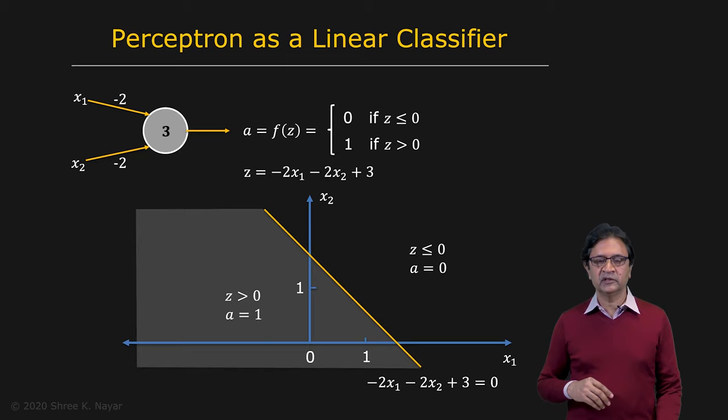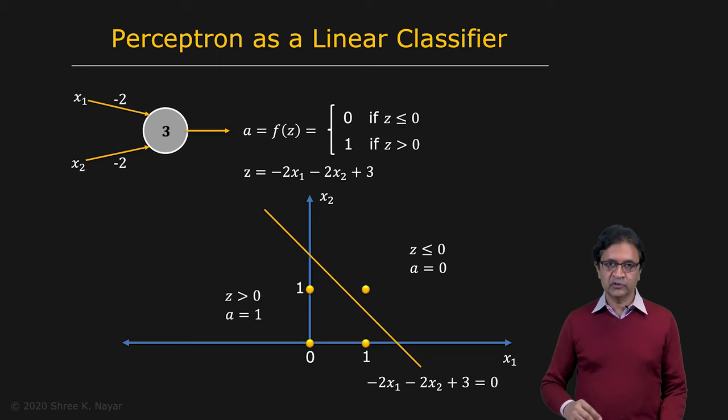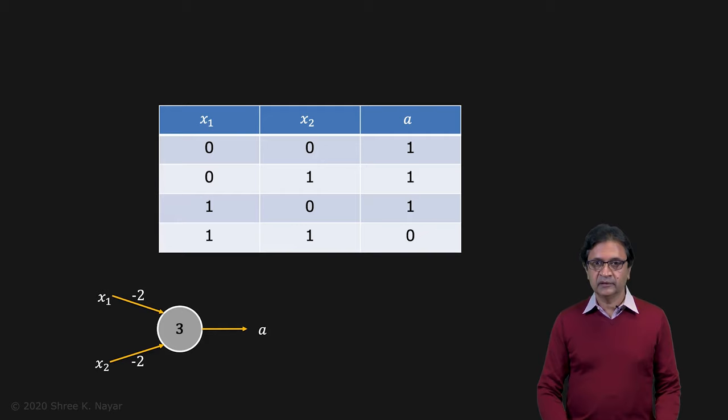Now let's take this one step further and make the assumption that the inputs are binary. So if the inputs are binary, zero or one, then there are only four possible inputs to the perceptron. You have zero zero, one zero, zero one, and one one. Those are the four inputs. And based on these inputs, you know what the outputs are going to be. Zero zero gives you a one as the output. Zero one gives you a one. One zero gives you a one and one one gives you a zero. If you take a look at this table, you see that what is being performed here by this perceptron is exactly what a NAND gate performs.